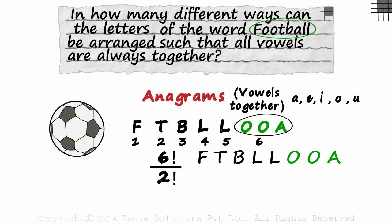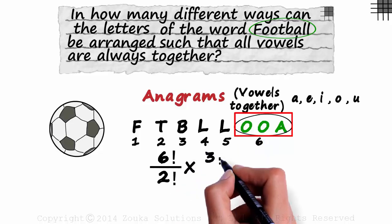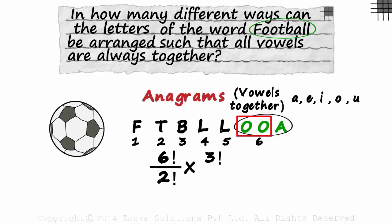F, T, B, L, L, O, O, A is different from F, T, B, L, L, O, A, O or F, T, B, L, L, A, O, O. Now just focus on the sixth element. It has three letters out of which two are repeated. As it has three letters, we multiply these with three factorial. And as two are repeated, we divide this by two factorial. This is our answer. These many anagrams of the word football can be formed such that all its vowels are always together.